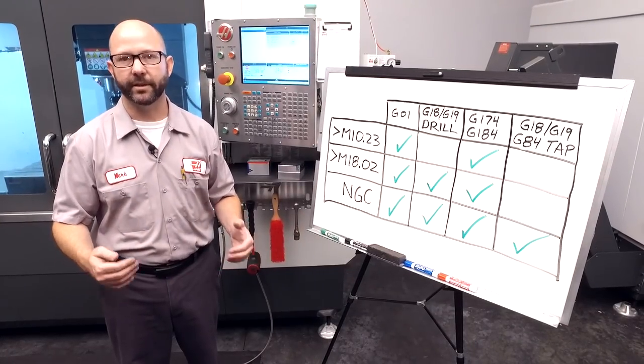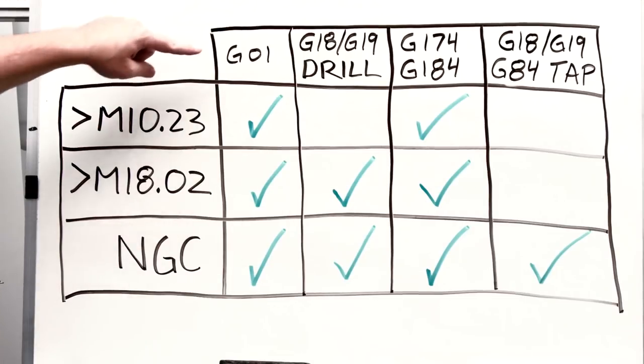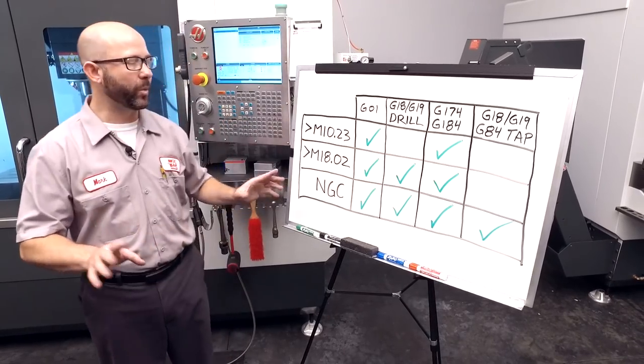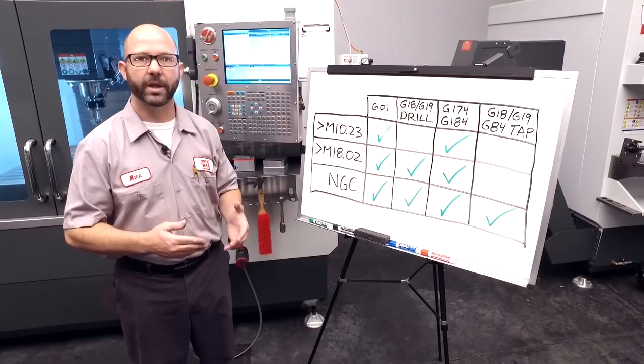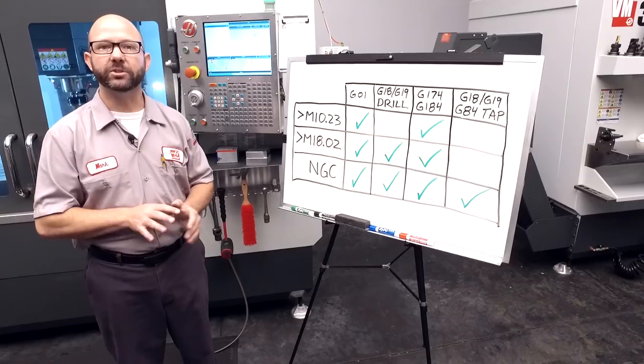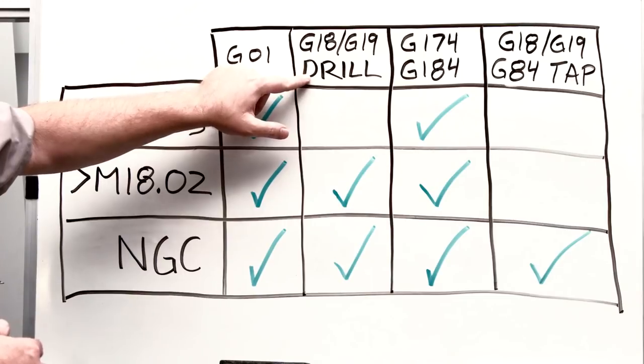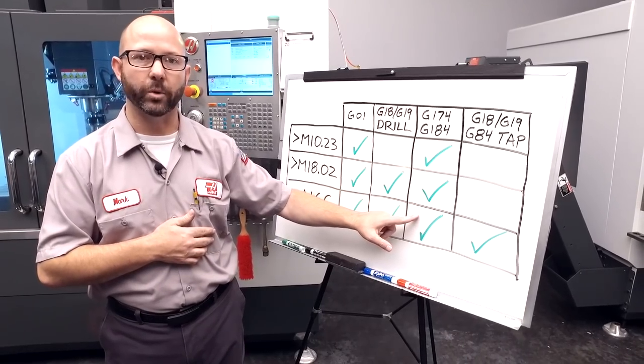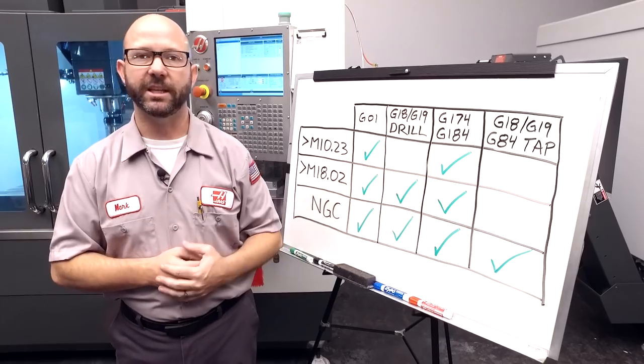Now, Haas has been making mills for three decades, and there have been constant software improvements along the way. So, which of the cycles that we talked about today can you use on your machine? Well, we've been able to drill using a G1 and vector tap using a G174, G184, all the way back since mill version 10.23. Now, if you want to use normal can cycles like a G81 in a G18 or G19 plane, you've been able to do that on your Haas mill since version 1802. Now, mills that are leaving the factory today with the next generation control can do everything. They can drill using a G1, they can use normal can cycles in the G18 and G19 plane, normal drilling can cycles. They can vector tap using a G174 or G184, and they can also use typical tapping cycles like a G74 or G84 in the G18, G19 plane.